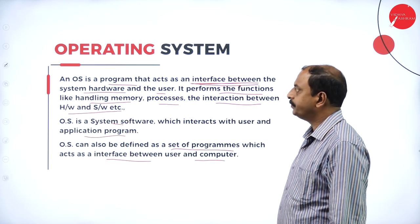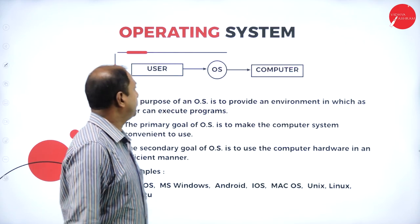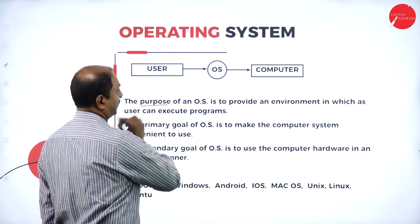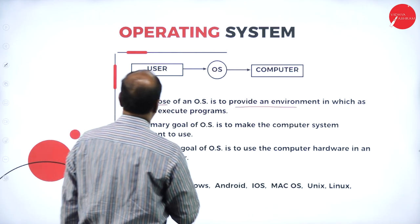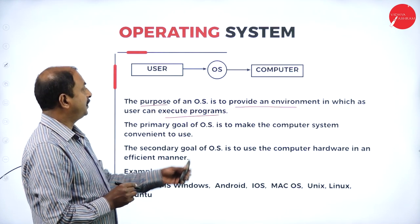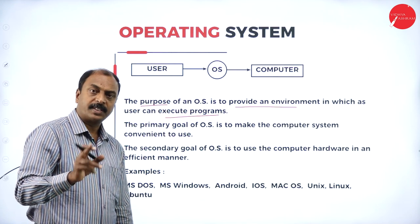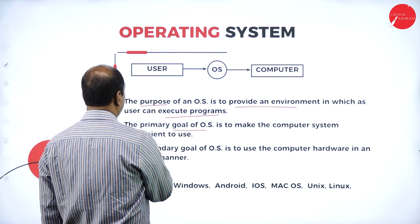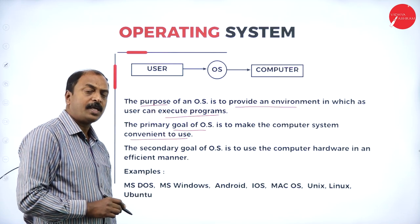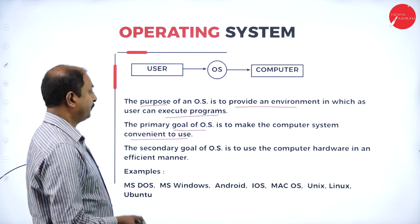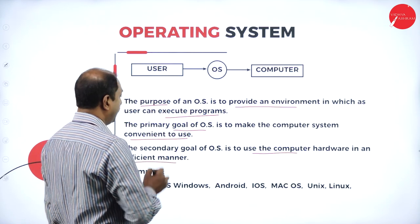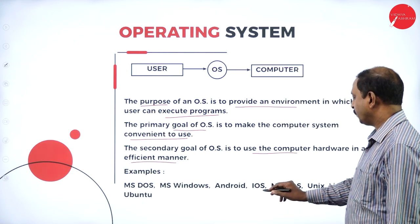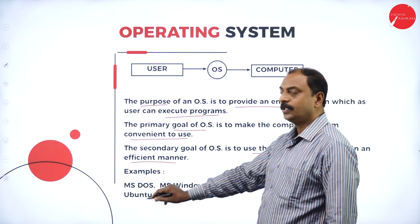This is how we represent it diagrammatically: user, operating system, and the computer. The purpose of the operating system is to provide an environment in which the user can execute programs comfortably. The goal is to make the computer system convenient to use and to use the computer hardware in an efficient manner. Examples of operating systems include MS-DOS, MS Windows, Android, iOS, Mac OS, Unix, Linux, and Ubuntu.